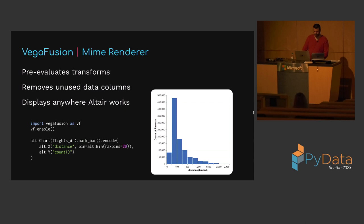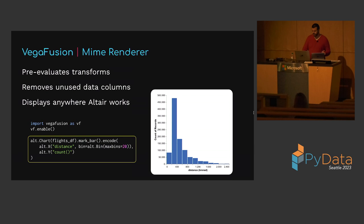The VegaFusion MIME renderer is enabled by importing VegaFusion and calling the vegafusion.enable function. When enabled, data transformations in Altair charts are automatically pre-evaluated in the Python kernel before being displayed. Unused data columns are also removed automatically to reduce the dataset size loaded into the browser. This approach makes it possible to scale most Altair charts to millions of rows as long as they include some form of aggregation. Here's the same distance histogram that raised the max rows error — with the VegaFusion MIME renderer enabled, it renders quickly and without error. This is compatible with every Jupyter-based environment that supports Altair, including Jupyter Notebooks, JupyterLab, Visual Studio Code, Colab, Hex, Notable, SageMaker, and many others.